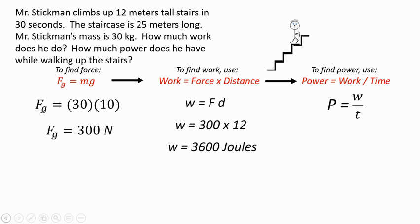So power is work divided by time. And we're told that he took 30 seconds to get to the top of the stairs. So we take his work and divide by time. And we get 120 watts.